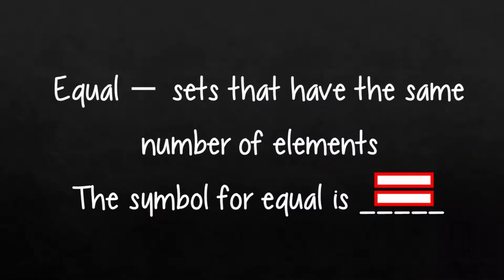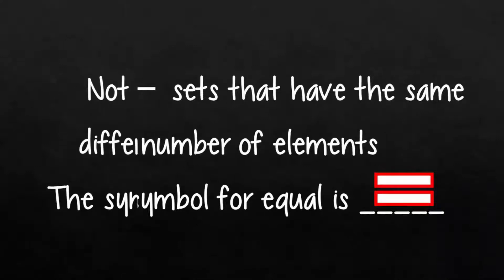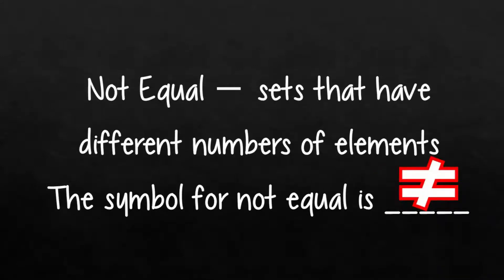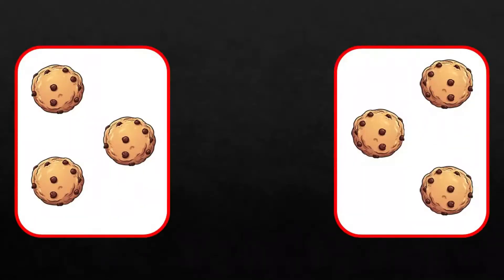Equal sets have the same number of elements; the symbol for equal is =. Not equal sets have different numbers of elements; the symbol for not equal is ≠. Look at the cookies — are they equal or not equal?